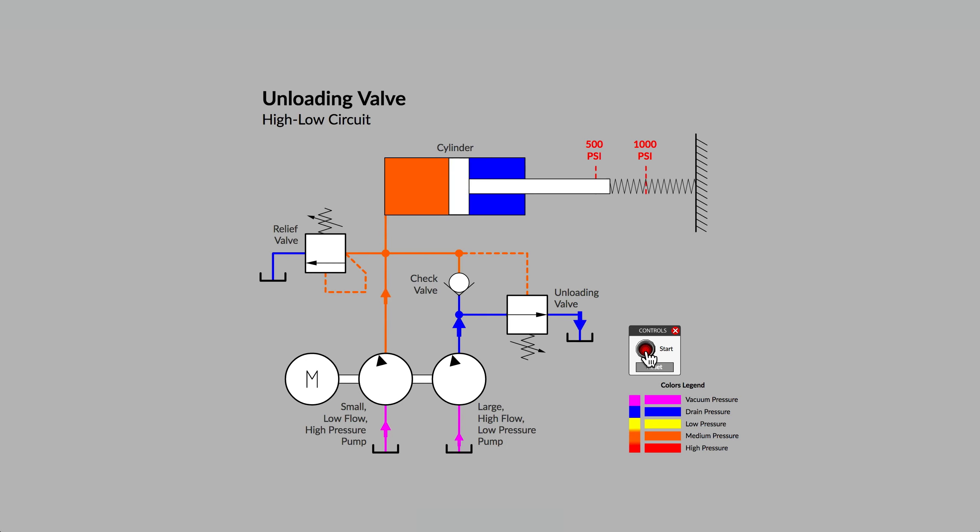What makes the unloading valve symbol unique is the presence of a check valve, which is a one-way valve, between the inlet port of the unloading valve and the pilot line that triggers the unloading valve. When the unloading valve opens, we only want the flow from the right-hand pump to pass through. The check valve prevents flow from the left-hand pump from escaping to tank.